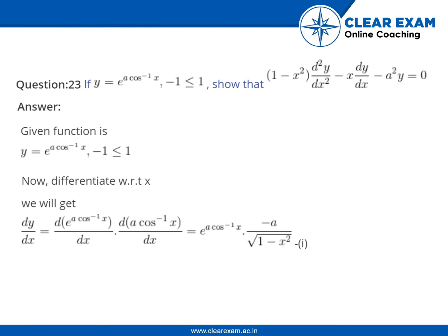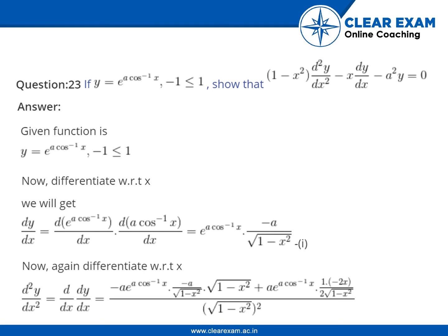Now differentiating with respect to x, we will get dy by dx is equal to d of e to the power a cos inverse x upon dx, into d of a cos inverse x upon dx, which is equal to e to the power a cos inverse x into minus a upon under root of 1 minus x square. Let it be equation 1.